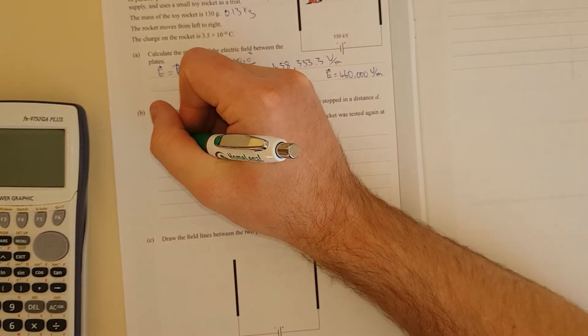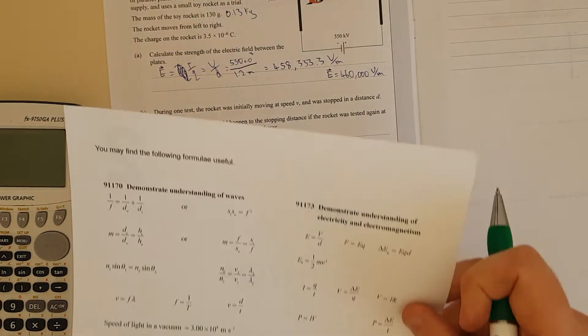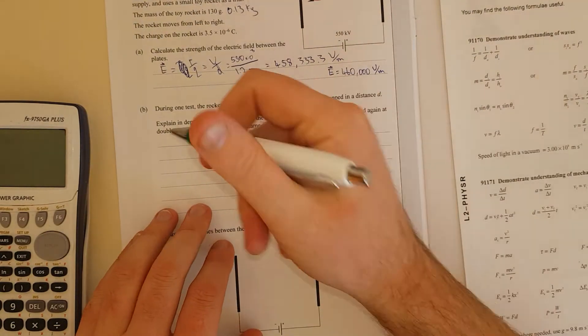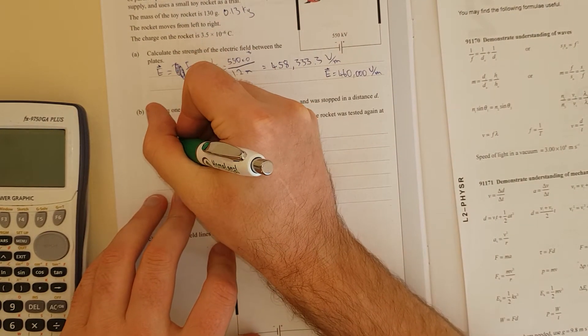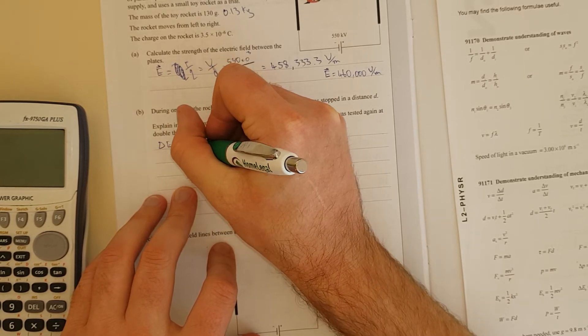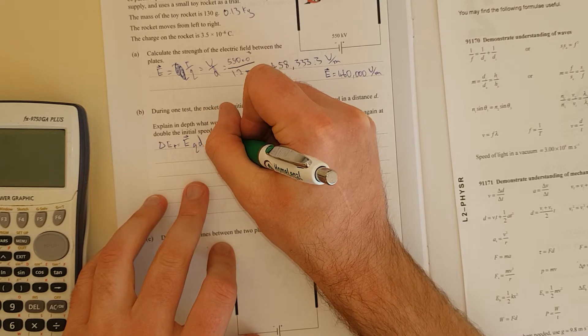So we have, in your formula sheet, the potential energy EQD. So we have delta EP equals E, this is the electric field, charge times the distance. And that's going to be equal to half MV squared.